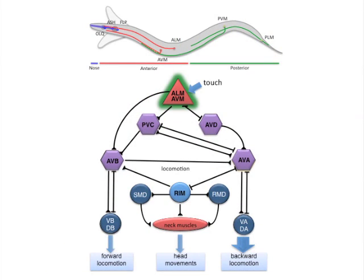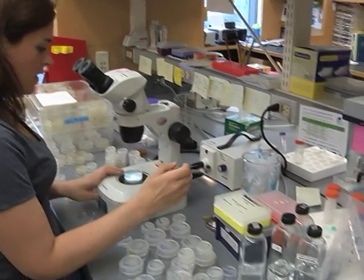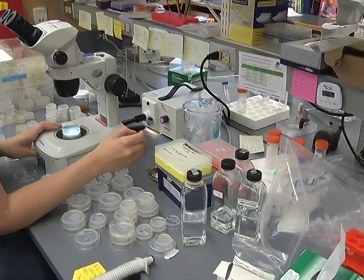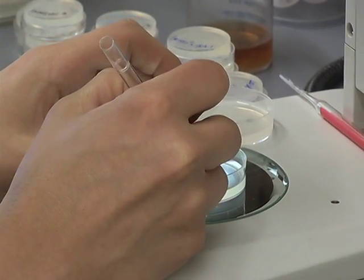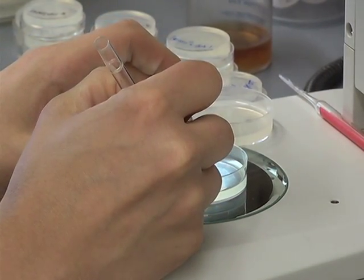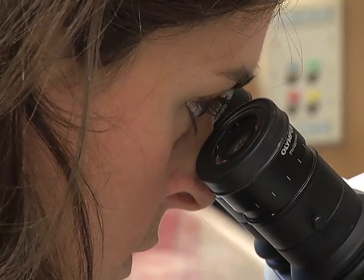So we know exactly the underlying structures that control behavior. The one thing we actually do not know very well is the why of the behavior — why would the animal suppress these head movements in response to a touch just behind the head, but not when you touch it at the tail or at the tip of the nose.